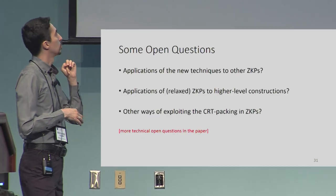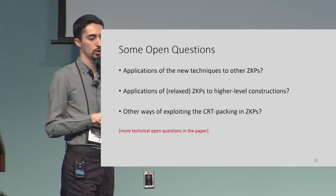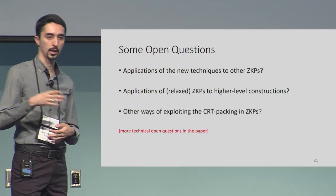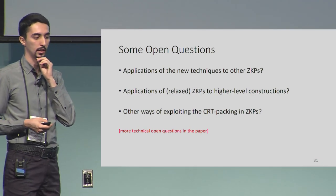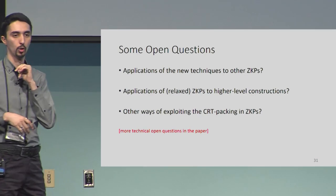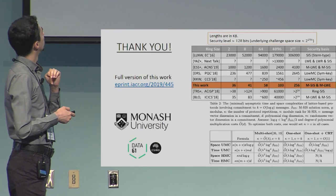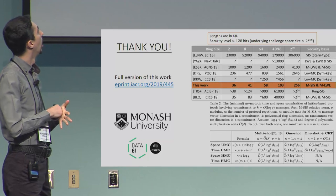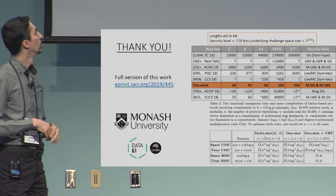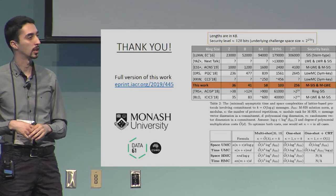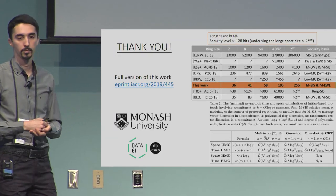Open questions include applications of these new techniques to other zero-knowledge proofs, their application to higher-level constructions, and other ways of exploiting the CRT technique — with more technical open questions in the paper. We also have an upcoming application of these advanced zero-knowledge proofs to a post-quantum confidential transactions protocol. Thank you.